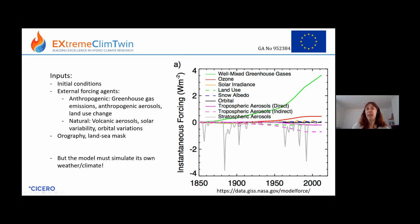This graph shows the forcing in watts per metre squared from 1850 to around 2000. The green line is greenhouse gases — it has a positive and increasing forcing, so that causes warming. The grey line is volcanic eruptions — they cause a short cooling effect. The orange line is solar variability, showing the 11-year solar cycle, which has quite a small effect compared to some of the other things.